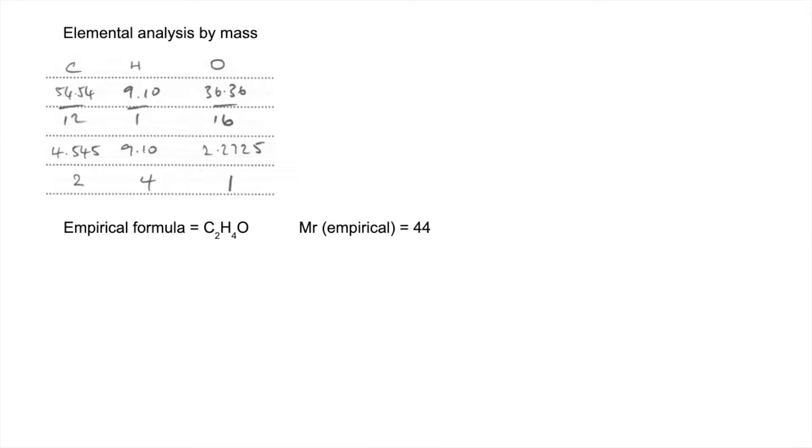And then we're going to bring in the information from the mass spectrum. So we're told the molecular ion peak, M over Z 132. So that's obviously the MR of the molecule. So we divide that by the 44 that we got for the MR of the empirical. So the molecule is 3 times heavier if you like. So we just multiply the empirical formula out by 3. So we get a molecular formula of C6H12O3.